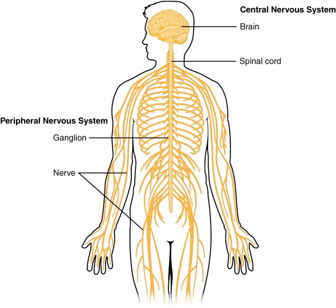The brainstem consists of the medulla, the pons, and the midbrain. The medulla can be referred to as an extension of the spinal cord, which both have similar organization and functional properties. The tracts passing from the spinal cord to the brain pass through here. Regulatory functions of the medulla nuclei include control of blood pressure and breathing. Other nuclei are involved in balance, taste, hearing, and control of muscles of the face and neck.